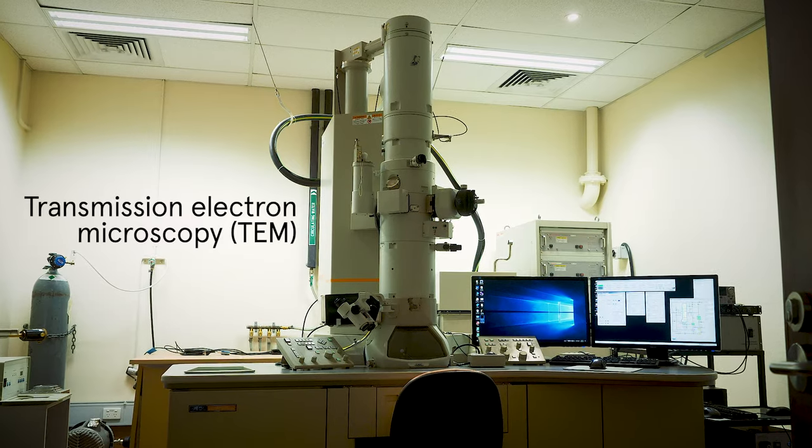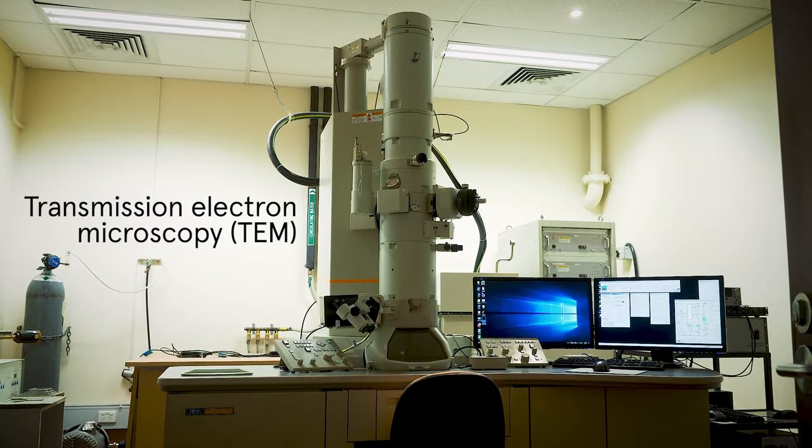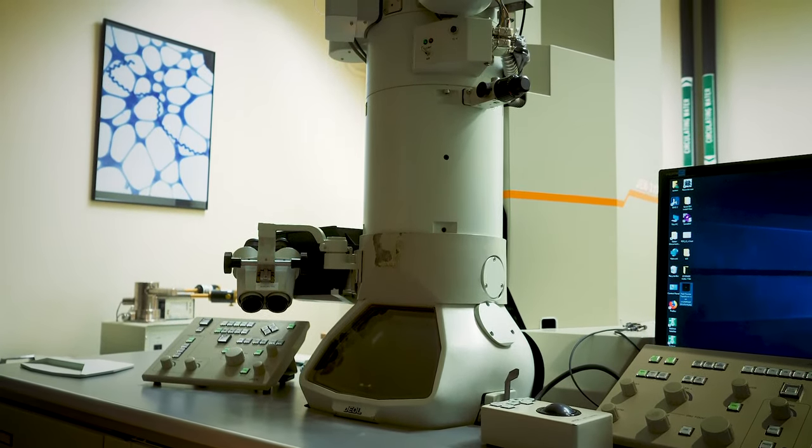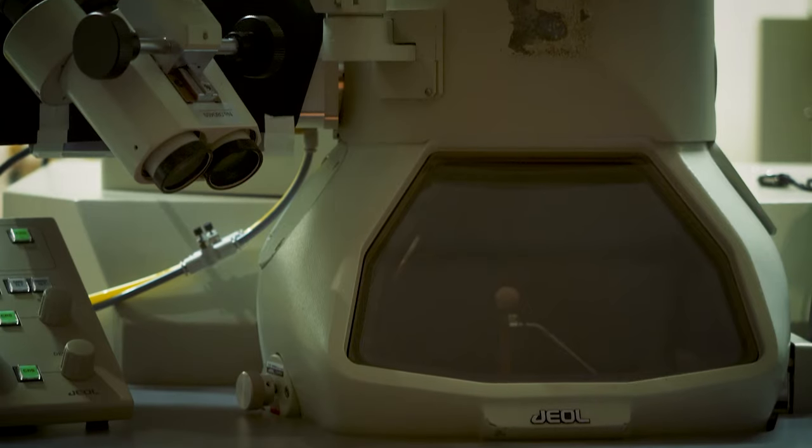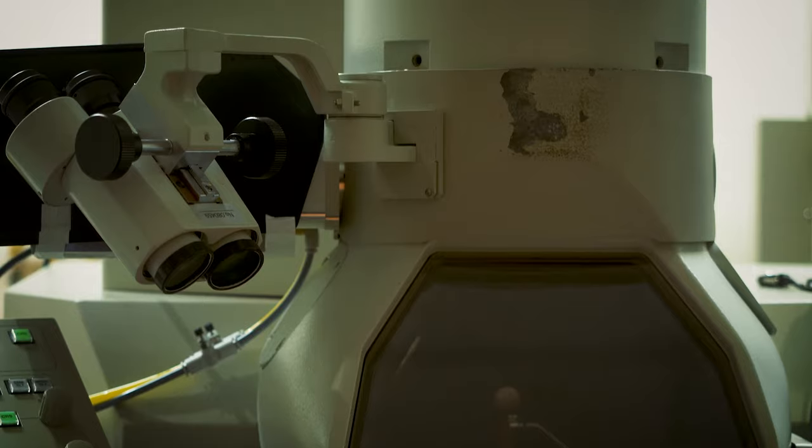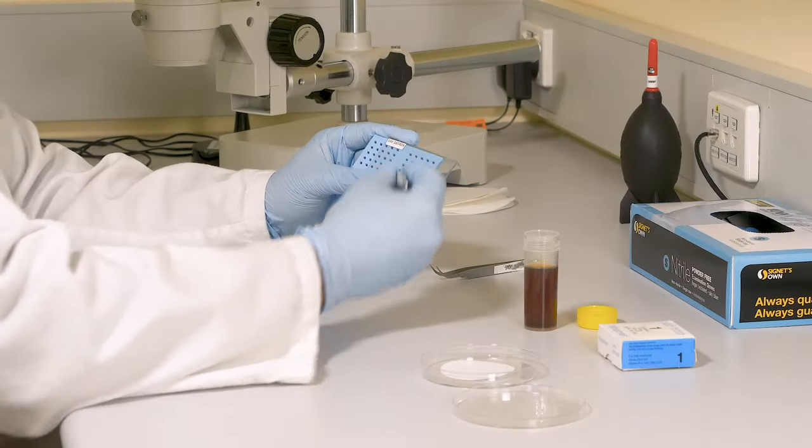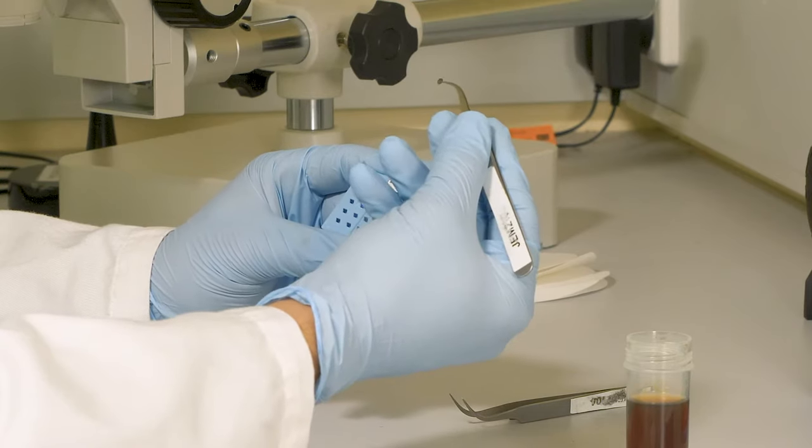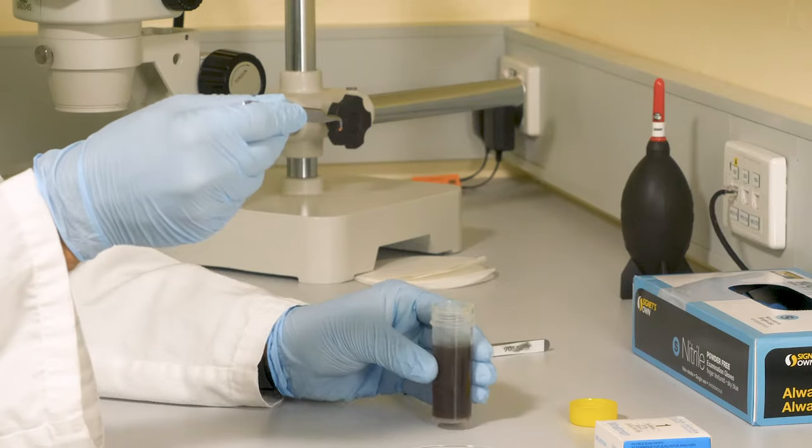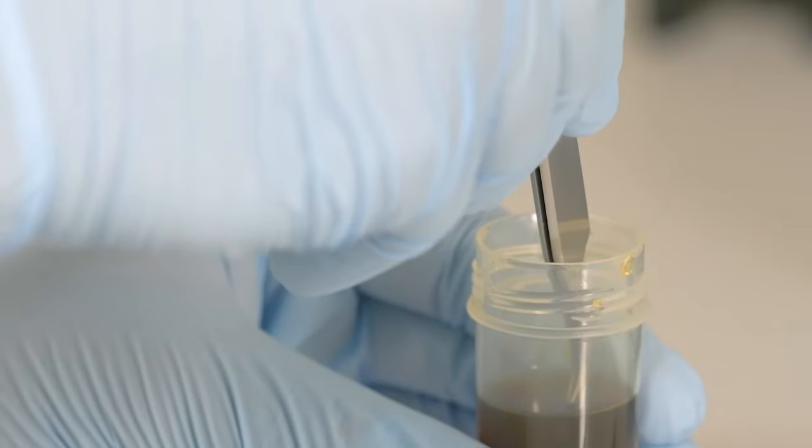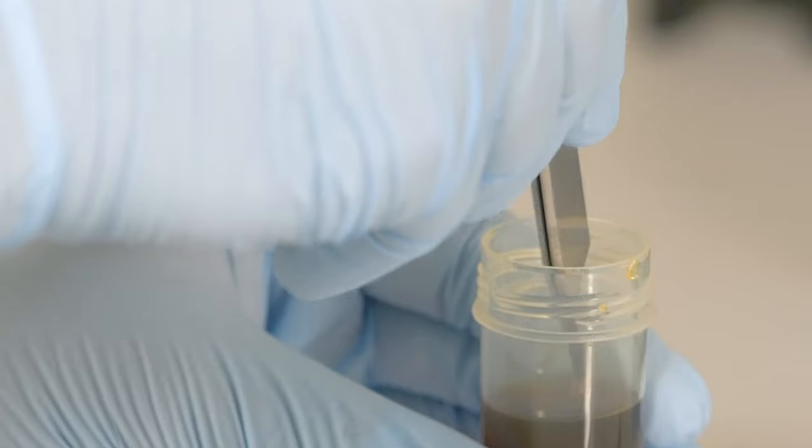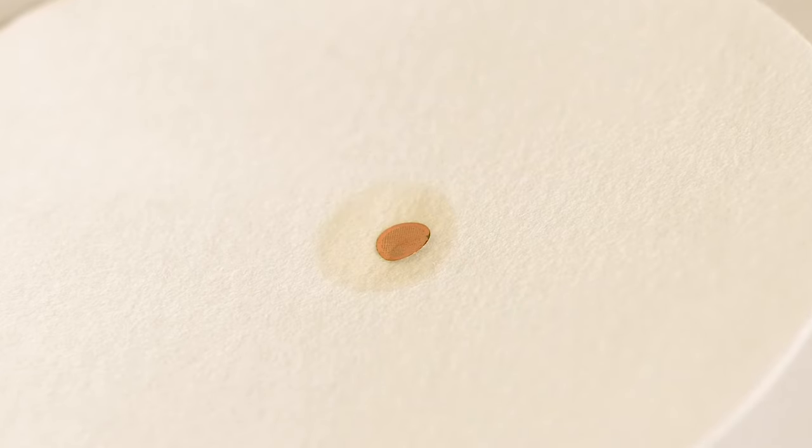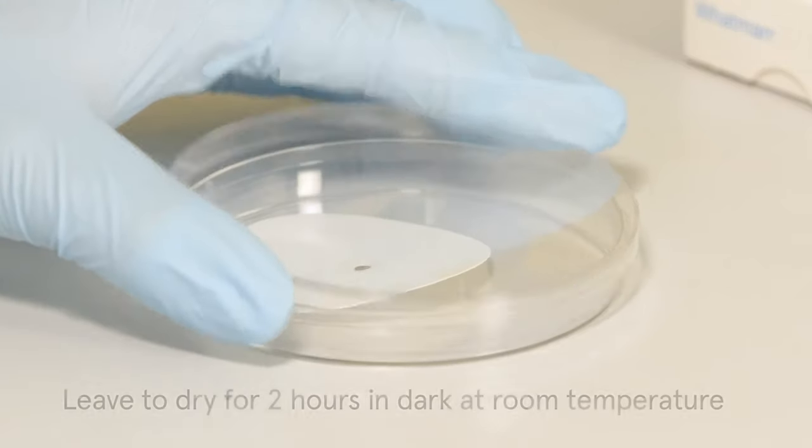I am going to use transmission electron microscopy or TEM as a super powerful instrument to measure the particle size of my carbon quantum dots. TEM is a microscopy technique in which a beam of electrons is transmitted through a specimen to form an image. First, we prepare the TEM grids by dipping the grid into the synthesized carbon quantum dot solution. We will leave it to dry for a couple of hours in the dark at room temperature.